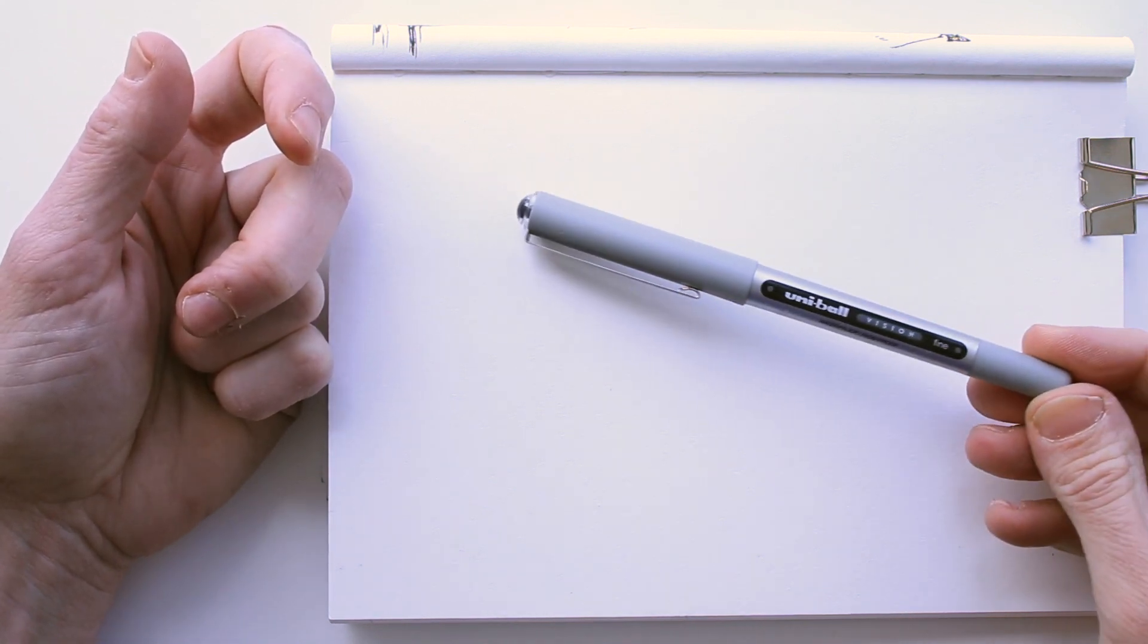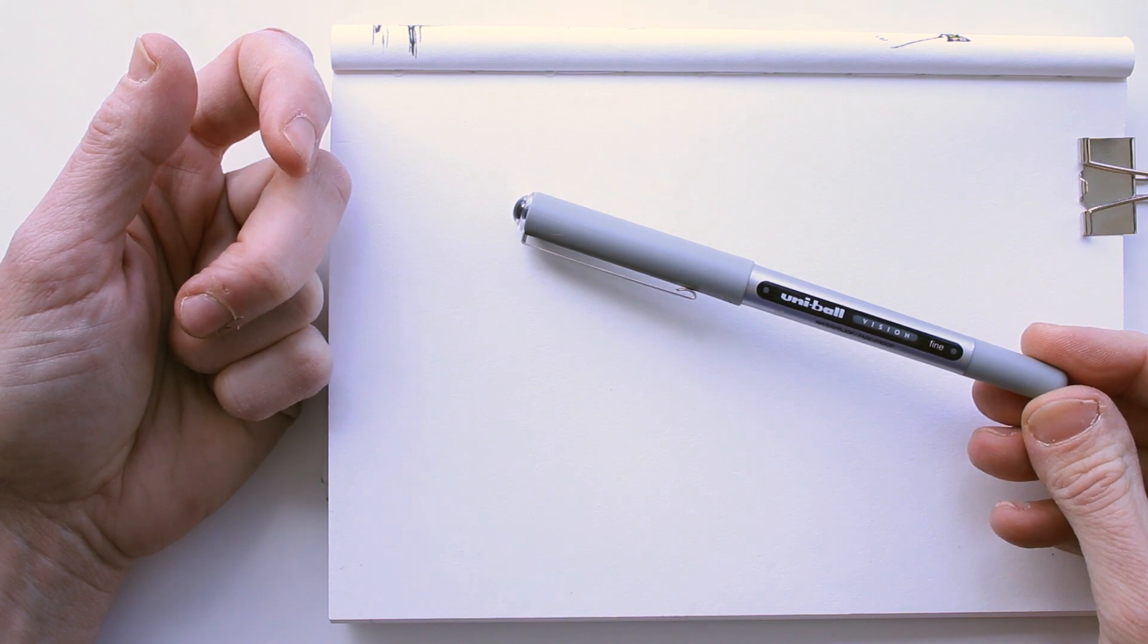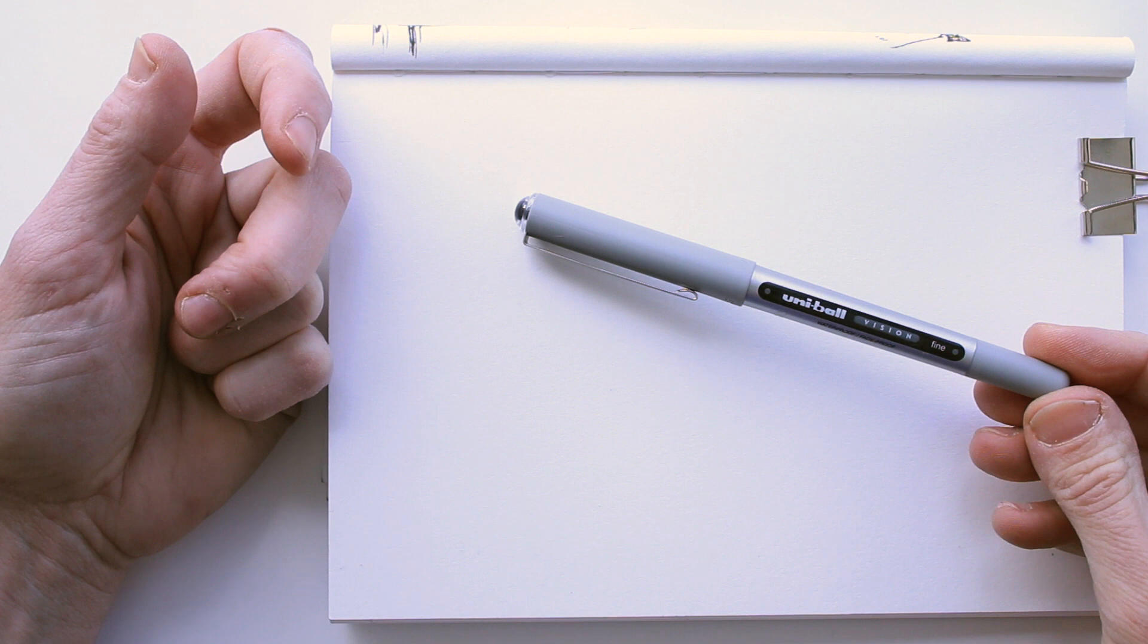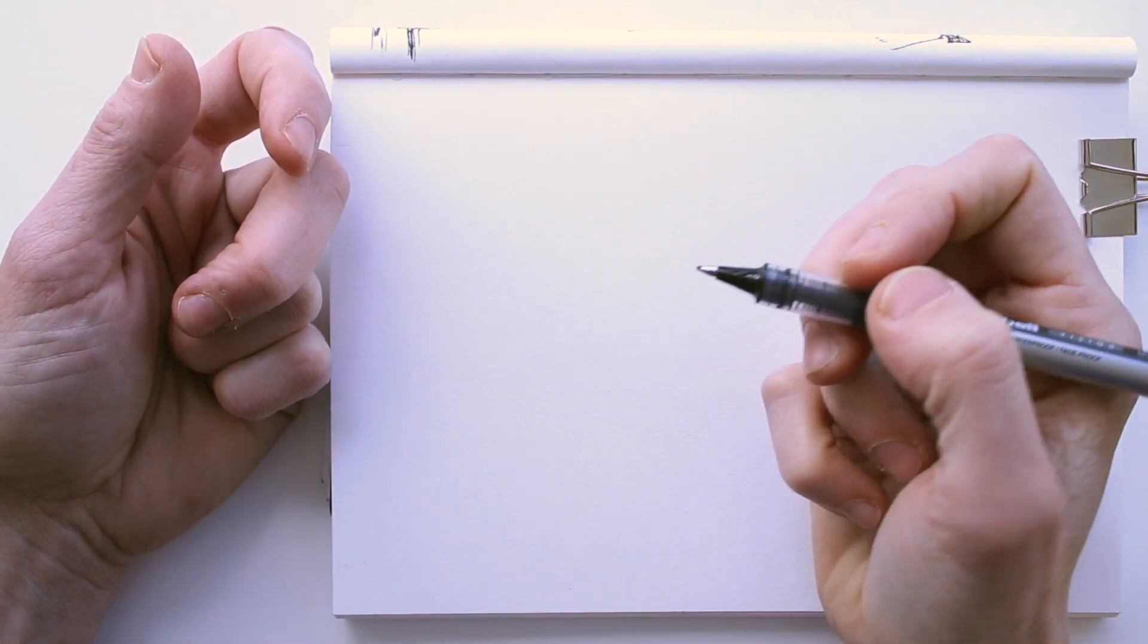I'm using a roller ball pen from Uniball. I like it for its consistent and juicy line, and the ink is water resistant, so if I want to add watercolors to my drawing, I can do that without the lines bleeding.